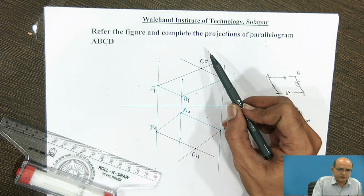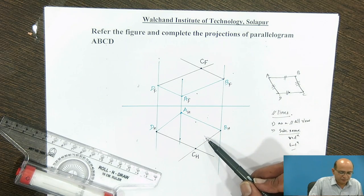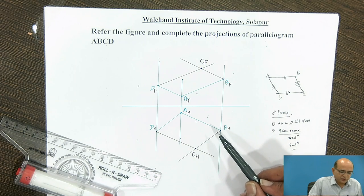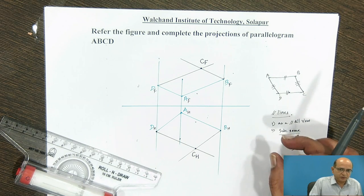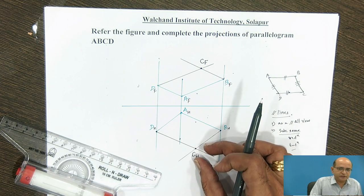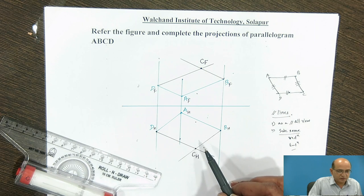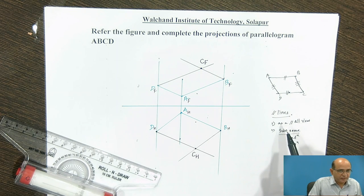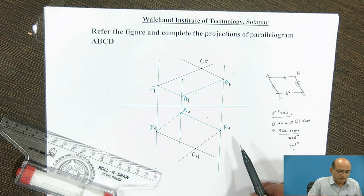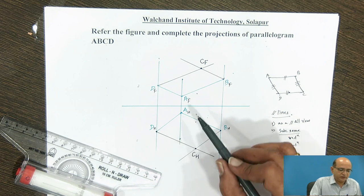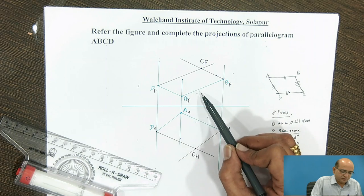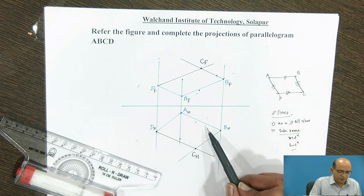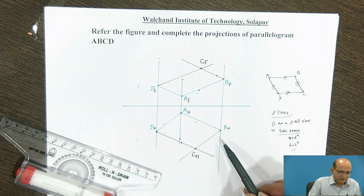So, completing the projection means completing the front view and top view of the plane. It is now clear that we are using the properties of parallel lines — the knowledge of projection of lines — in completing problems related to planes. The concept used here is that lines appear parallel in all views: AD is parallel to CB, DC is parallel to AB in the front view; and in the top view, AB is parallel to DC, and AD is parallel to BC.